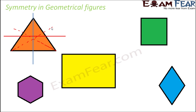Now let's move on to a rectangle. A rectangle has a vertical line of symmetry, and it also has a horizontal line of symmetry because both horizontal and vertical lines divide it into two equal halves.